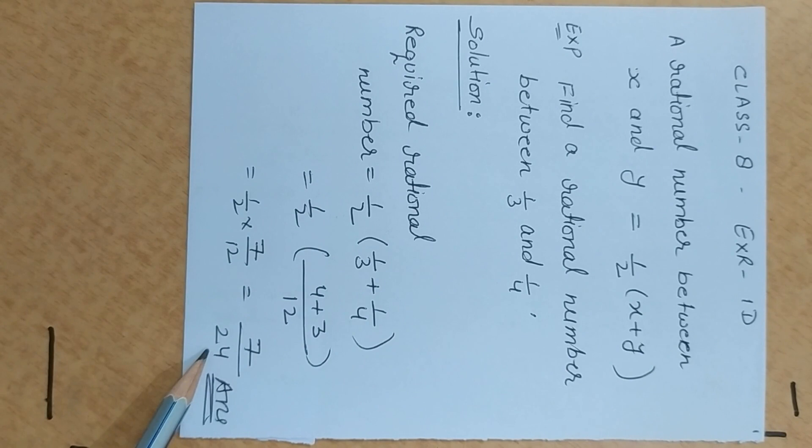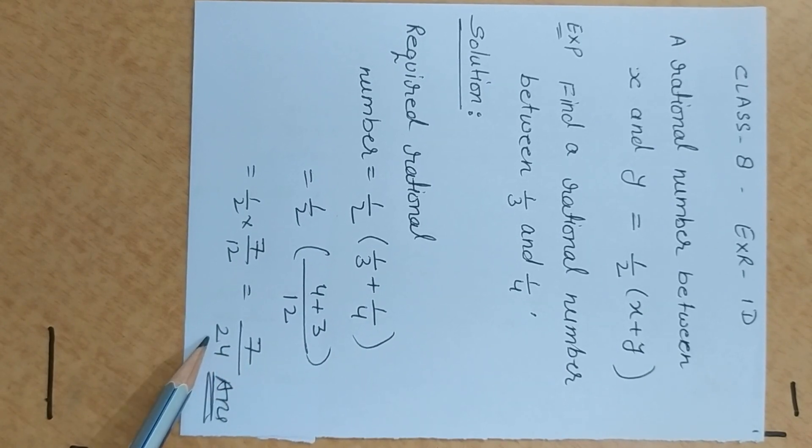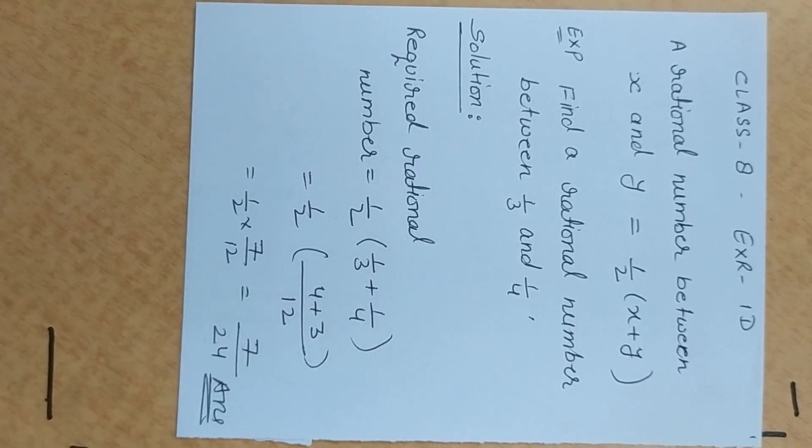By 2, 7 by 24. So 7 by 24 is a rational number between 1 by 3 and 1 by 4.